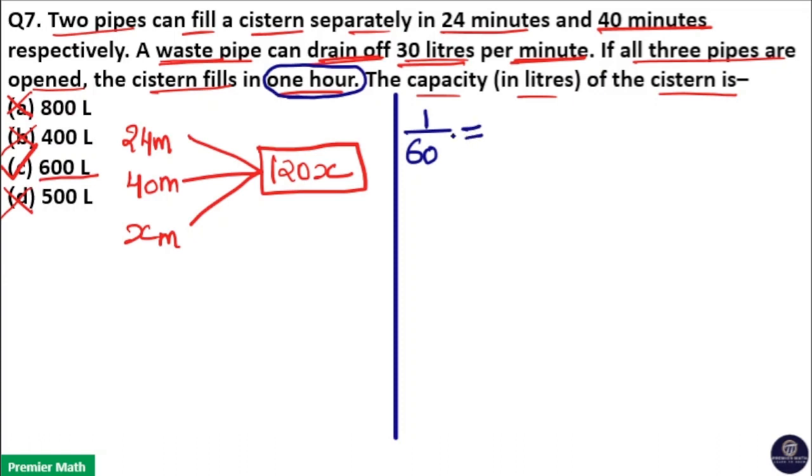Now, the first pipe will take 24 minutes, so take 1 by T1. 1 by T1 is 1 by 24. Now, this is filling the tank, so positive. Again, the second pipe takes 40 minutes, so 1 by T2 is 1 by 40.